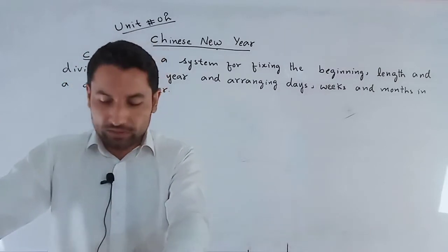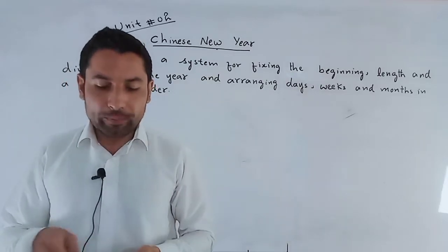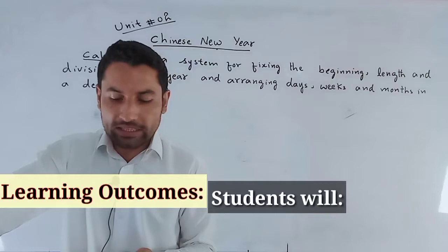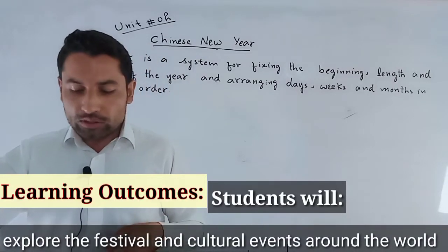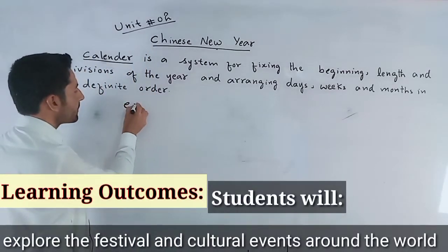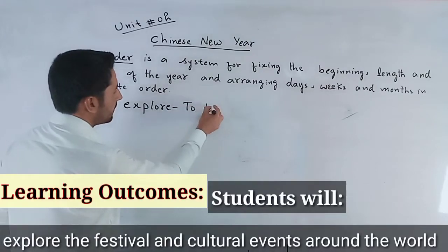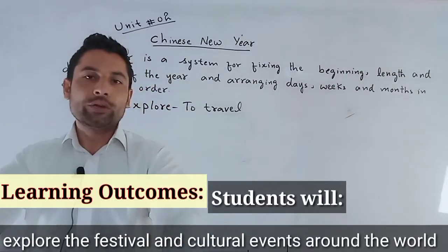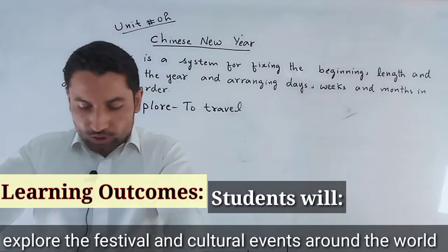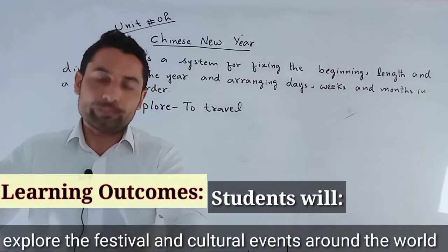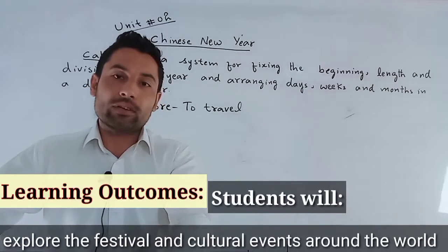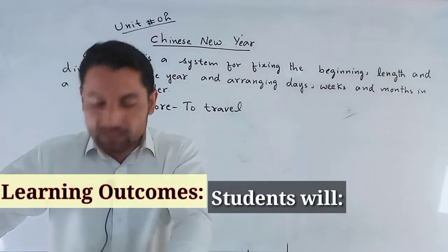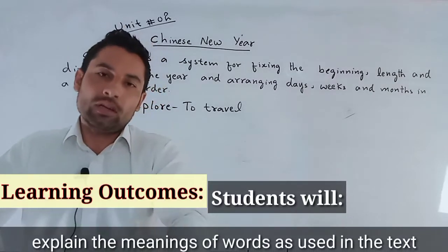First of all we will read the learning outcomes of this lesson. Look at your books. On the first page you can see the learning outcomes. After completing this unit, students will explore the festivals and cultural events around the world. Now the word explore means to travel — to travel around an area, around the country, around the world. So the students will explore, meaning they will learn about the different cultures around the world. Also, explain the meanings of words as used in the text — meaning the contextual meaning of the words they will learn.